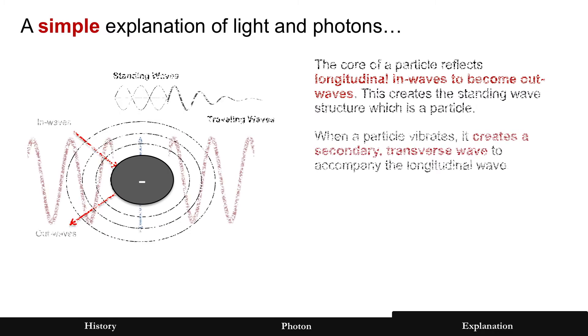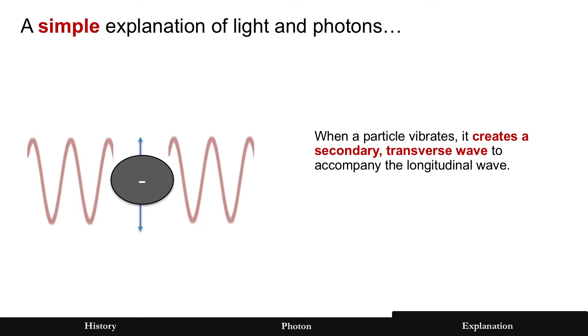But as that particle vibrates, it creates a secondary wave. That secondary wave is a transverse wave to go along with the longitudinal wave. Those are the two different parts that we see in the electromagnetic spectrum, which we see as electric and magnetic.